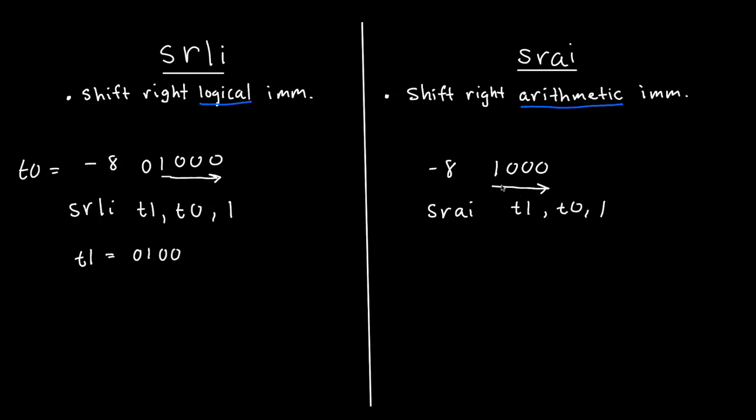Now, however, on Shift Right Arithmetic Immediate, it's going to say, okay, this is a 1, we have to add a 1. So T1 is going to hold the value of 1, 1, 0, 0.